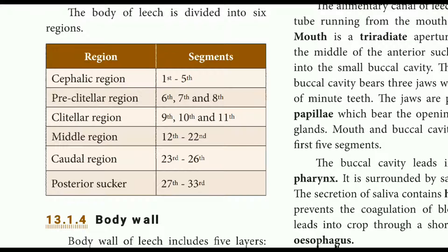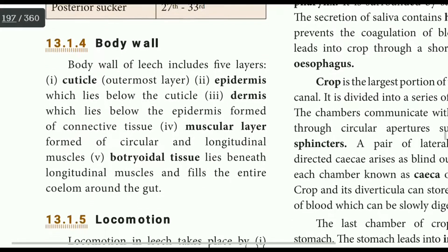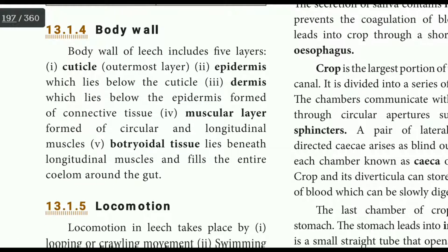The body wall has 5 layers: cuticle (outermost layer), epidermis, dermis, and muscular layer made of circular and longitudinal muscles, and parenchymal tissue. The muscles aid in locomotion.